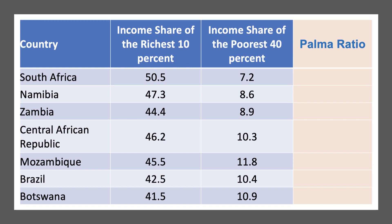Notice here the very, very high income share of the richest 10%. In South Africa, the richest 10% have over half of the cumulative income, whereas the poorest 40% only have 7% of income. And of course, if you divide the richest 10% by the poorest 40%, you get the Palmer Ratio.